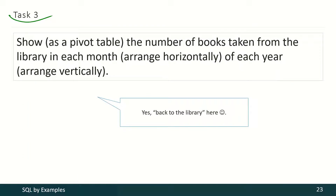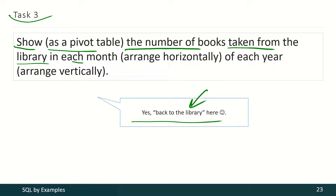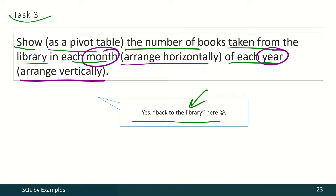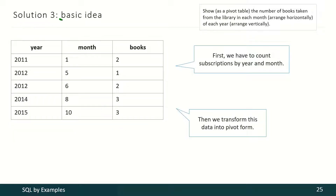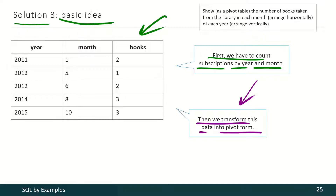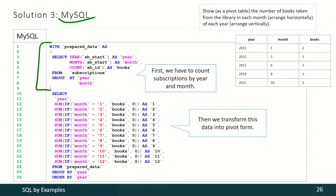In the last task we are returning to our library database. Here we have to show as a pivot table the number of books taken from the library in each month of each year, with months arranged horizontally and years arranged vertically. This is how the expected result looks like. The basic idea is that first we have to count subscriptions by each year and month, then transform this data into pivot form.